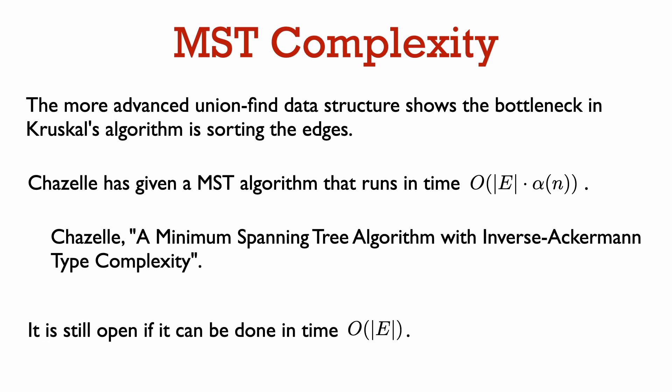This more advanced union-find shows that the bottleneck in Kruskal's algorithm is actually sorting the edges. The total time for tasks two and three can be bounded by O(E · α(n)). There is another algorithm by Chazelle called 'A Minimum Spanning Tree Algorithm with Inverse-Ackermann Type Complexity' that achieves O(E · α(n)) overall. It still remains an open problem whether computing a minimum spanning tree can be done in linear time, i.e., time proportional only to the number of edges.